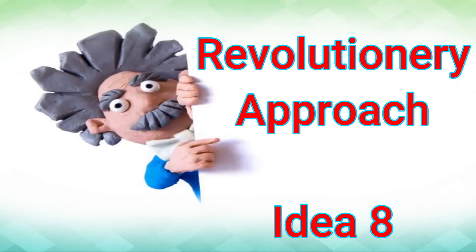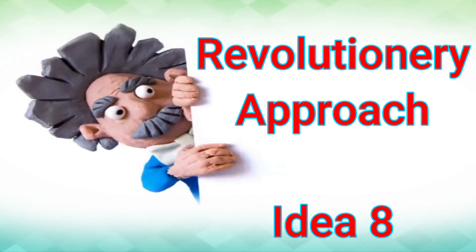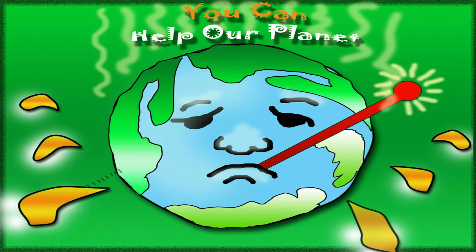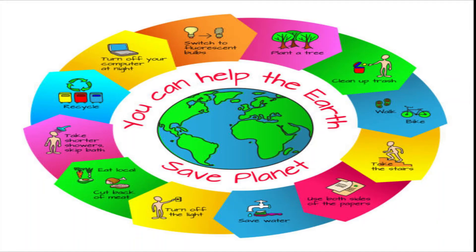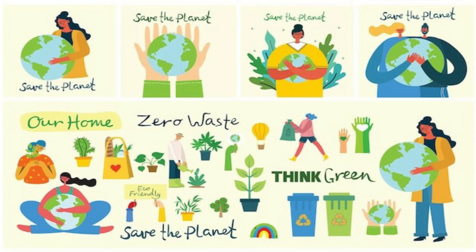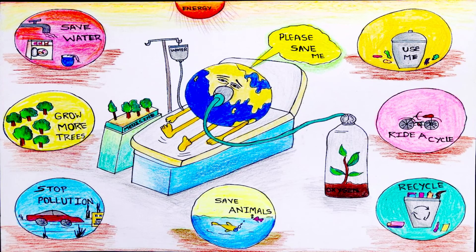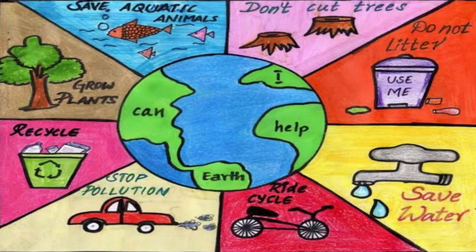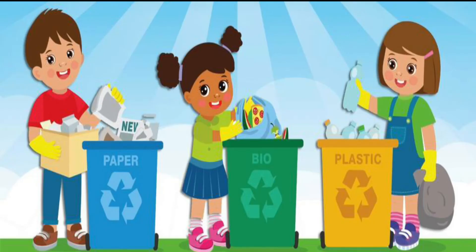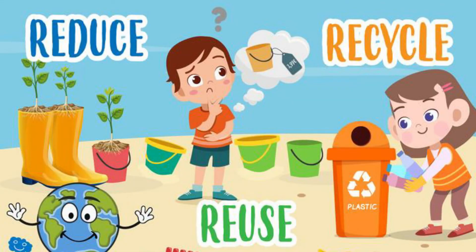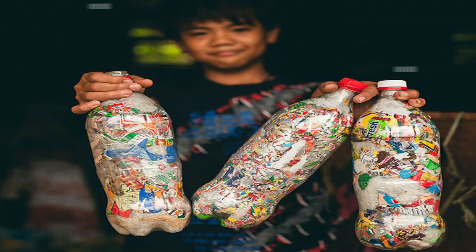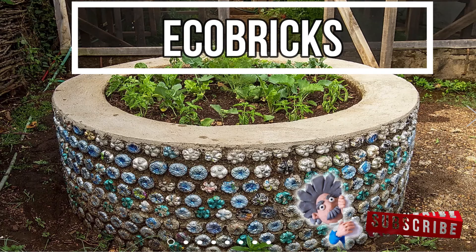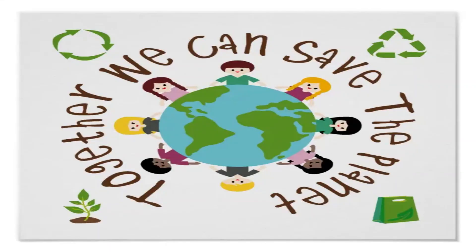Idea number eight is a revolutionary approach towards the environment. In this activity, students can be told a week before to think of innovative ideas on how they can bring change in their surroundings. On National Science Day, students can share their ideas on how their actions can improve the environment or what they can do to conserve nature. Sometimes an idea with a practical approach can be implemented and bring real change in our lives.